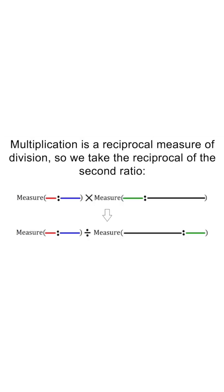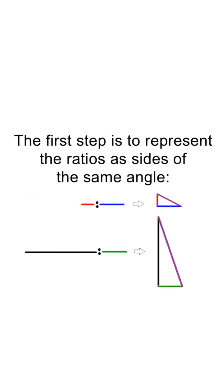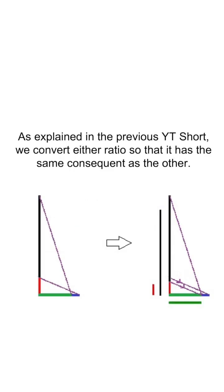First, we take the reciprocal of the second ratio. Then, we represent the ratios as sides of the same angle and convert them so that they have the same consequent.